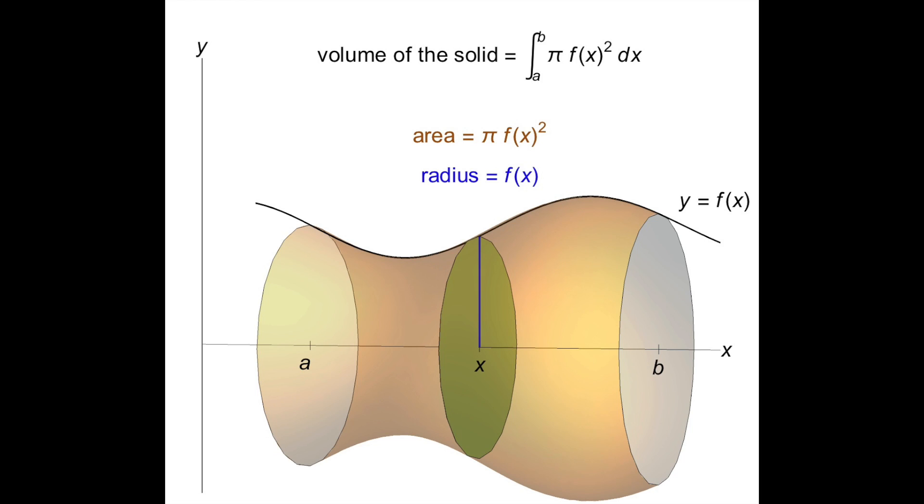In Calculus 2, we extend our knowledge about the application of definite integrals to volumes of solids of revolution. We will be finding the definite integral of the volume of a cross-section with its corresponding height.